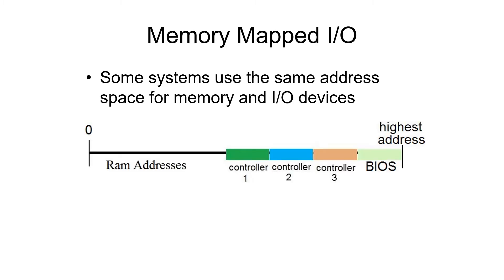In memory-mapped I/O, the I/O controllers and the memory use the same memory space. That is, you might have a memory address at 42, but you can't also have an I/O controller at that address. Typically the I/O controllers are at one end of the memory — often the high end — so the I/O controllers have very large addresses.